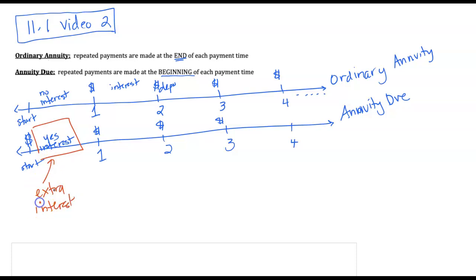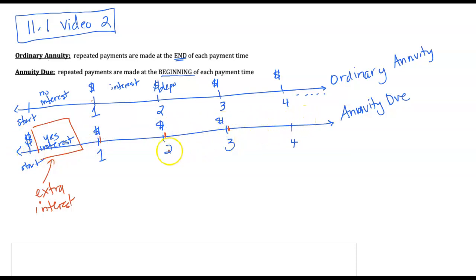You're not making any extra payments. If you think about one year, you would make four quarterly payments. In an ordinary annuity, those four quarterly payments would be at the end of the first quarter, end of the second, end of the third, end of the fourth. With an annuity due, you make your quarterly payments at the beginning of the first quarter, beginning of the second quarter, beginning of the third quarter, beginning of the fourth quarter, and so on. You still make the same number of payments — it's just that this extra interest is calculated.